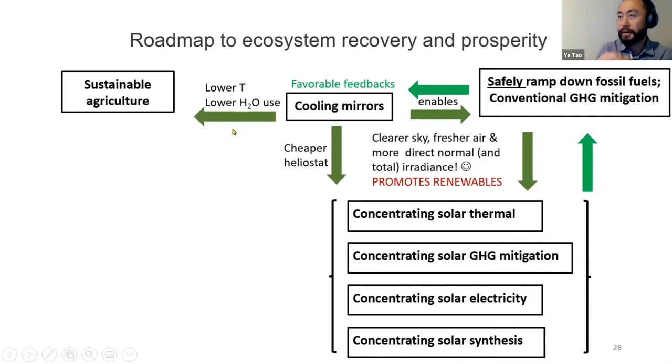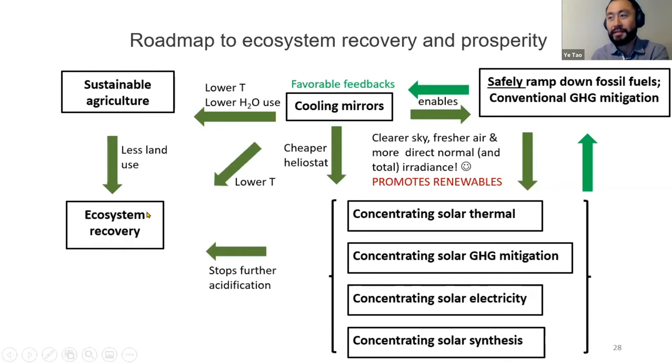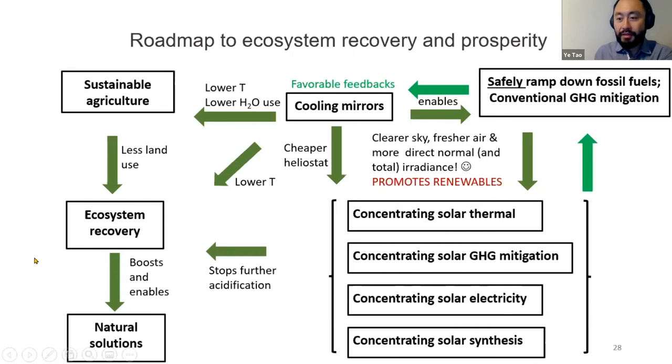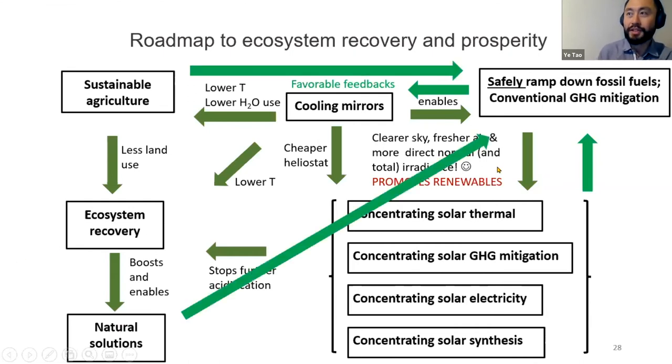The cooling environment will favor sustainable agriculture because you don't need as much water. Ecosystems will be able to recover because heat will be less damaging. Eventually, a better environment will enable better efficiency for natural solutions and sustainable agriculture to act as slow but steady sinks for greenhouse gas in the atmosphere.